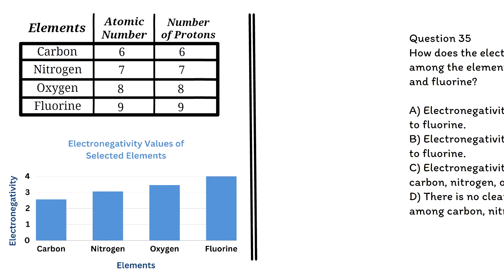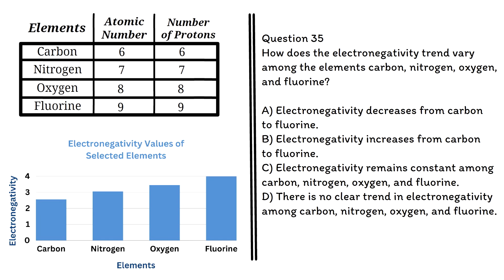Question 35: How does the electronegativity trend vary among the elements carbon, nitrogen, oxygen, and fluorine? a. Electronegativity decreases from carbon to fluorine. b. Electronegativity increases from carbon to fluorine. c. Electronegativity remains constant among carbon, nitrogen, oxygen, and fluorine.